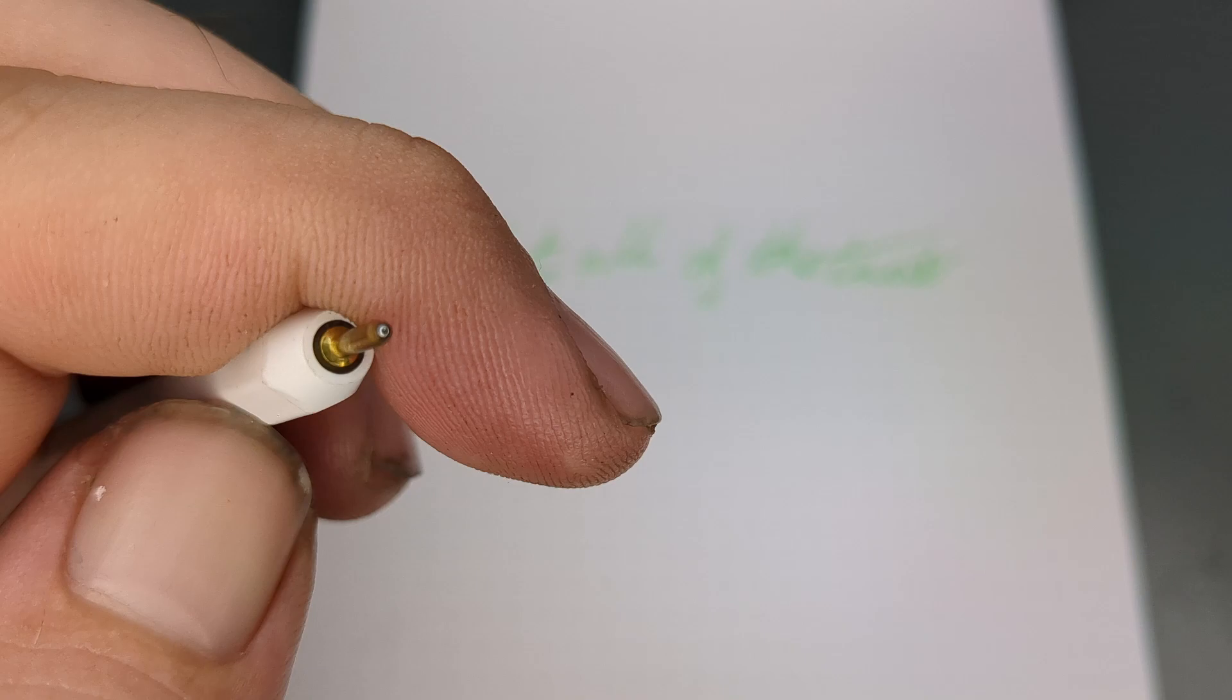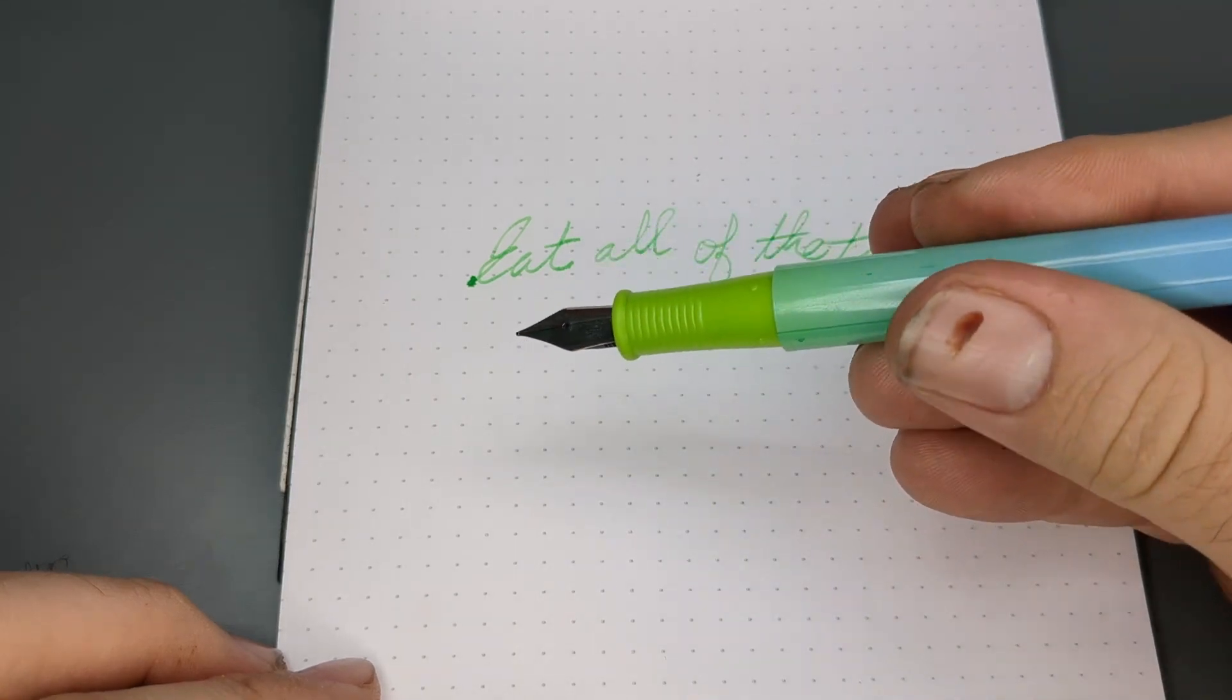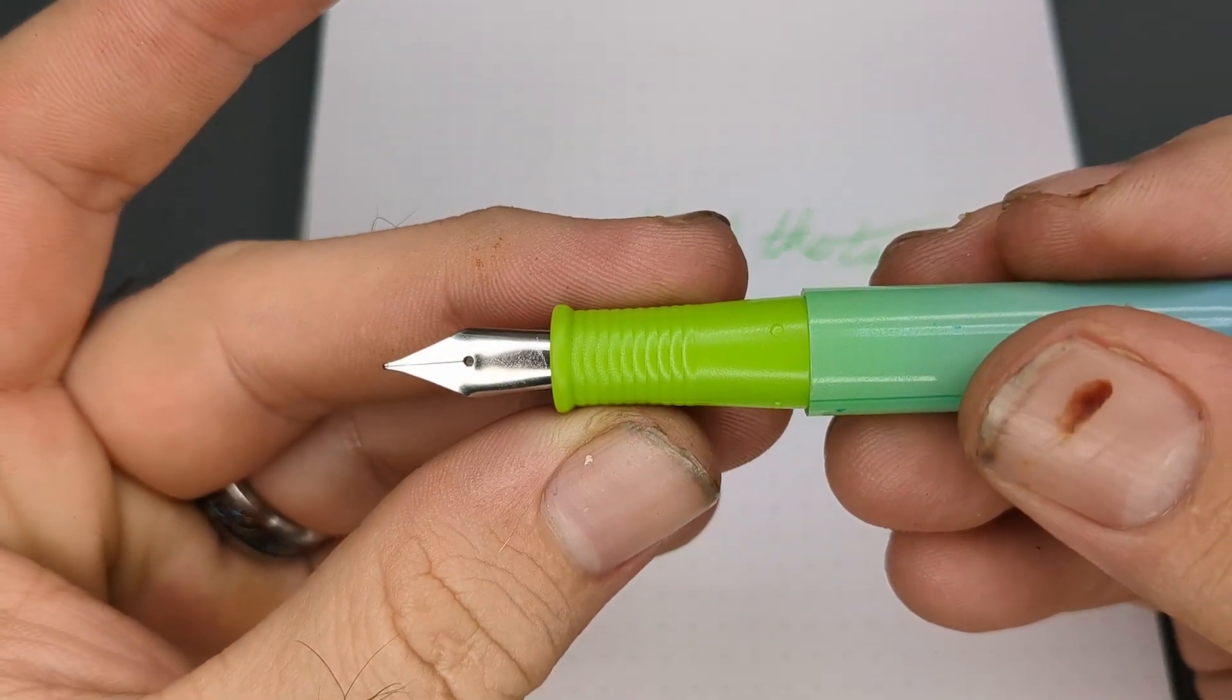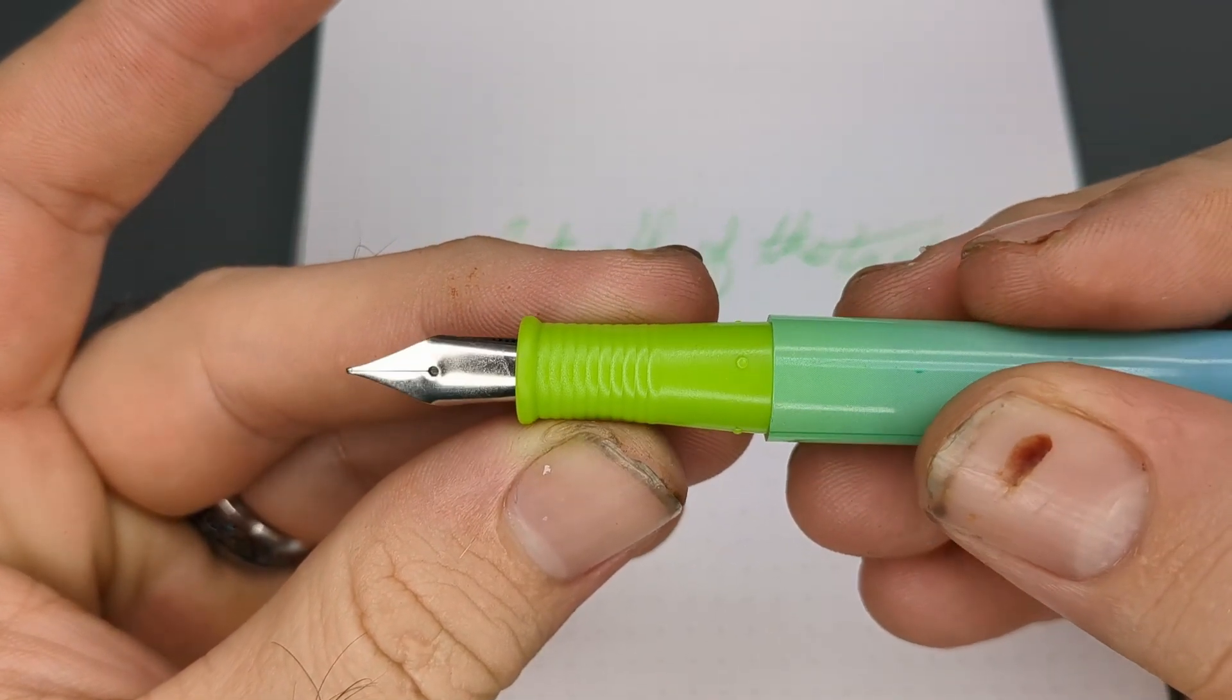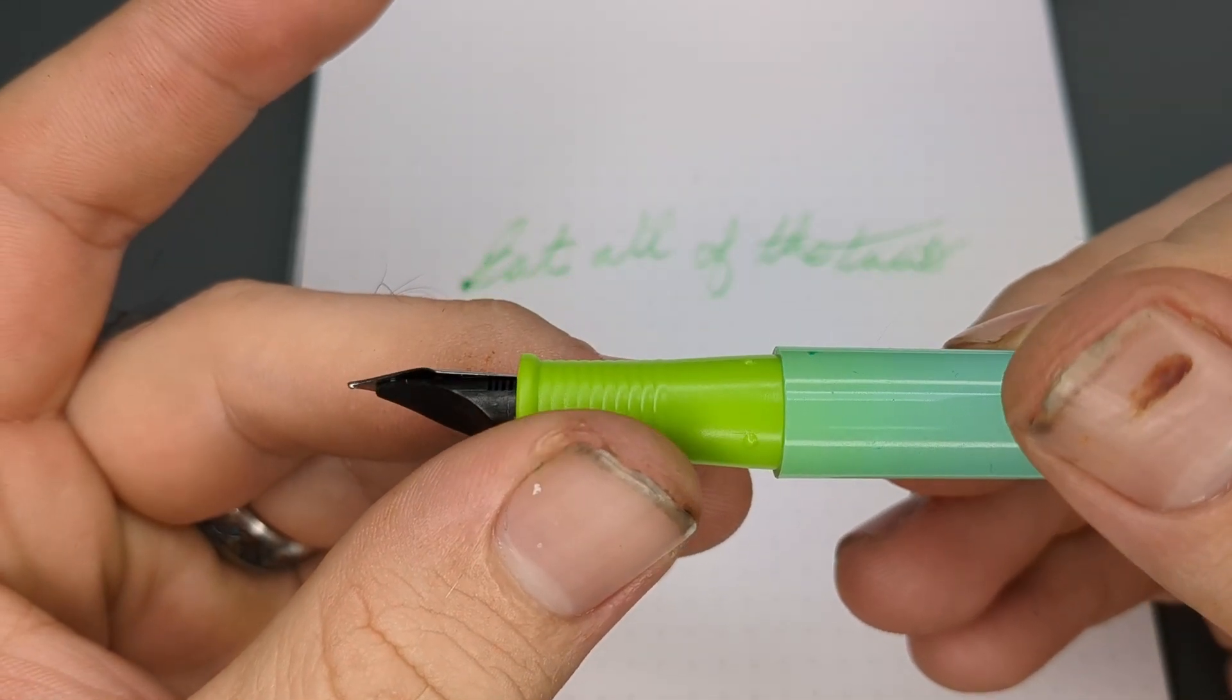this process requires a fair amount of downward pressure to keep the ball rolling. Fountain pens not only require little to no pressure to write, using excess force will actually damage the pen.